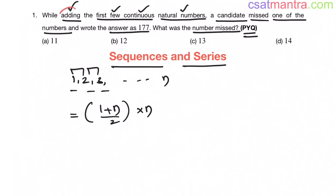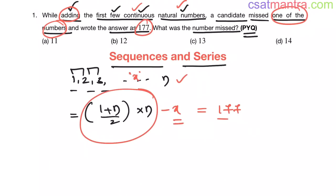Now while adding first few continuous natural numbers, a candidate missed one of the numbers. Let us call that number as x. So the sum he got after missing that one number is 177. So this minus x equals 177. He has to add all the numbers, but he missed one number and he got the sum as 177.